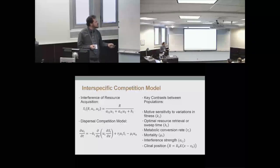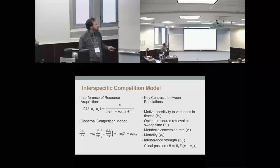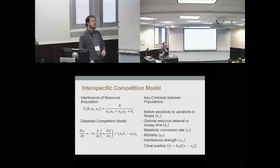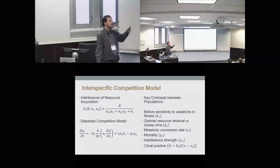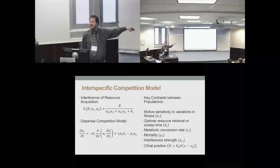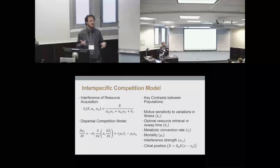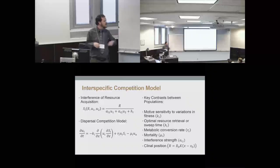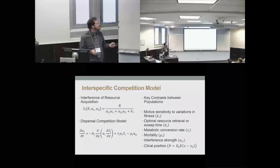We have the basic dispersal-competition model with the corrected version. We'll look at various contrasts: what happens when resource-gathering ability differs, when metabolic conversion to reproductive growth differs, when mortality risks differ, when interference levels differ, and when the resource curve itself is clinally dependent. For example, there might be a gradient of acidity: one area is very acidic, another alkaline, with one population doing well on acidic food and the other on alkaline. There'll be some overlap, but they'll be looking at different distributions of the resource and making different decisions.